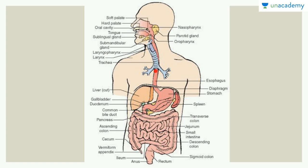The sublingual gland can be observed right here, then we've got the submandibular gland right under the mandibles, and one in the back which is the parotid gland. These unite and terminate into a long food pipe known as the esophagus. The esophagus terminates into the stomach. You do not need to mark the laryngopharynx and trachea here, as those are part of the respiratory system.